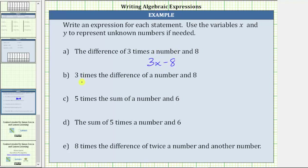For b, we have three times the difference of a number and eight. This statement means something quite different than a. Notice for b, we have three times the difference, and for a, we had three times a number.